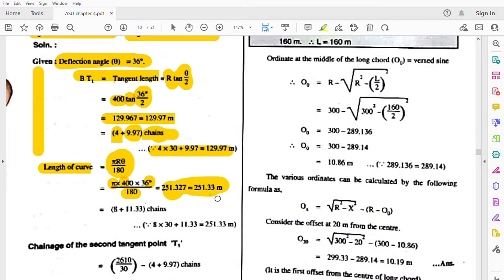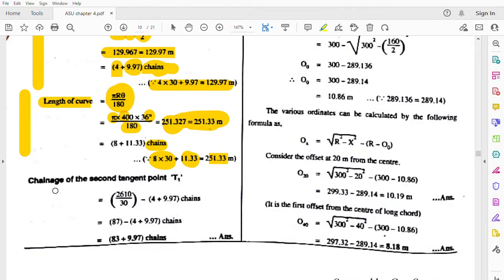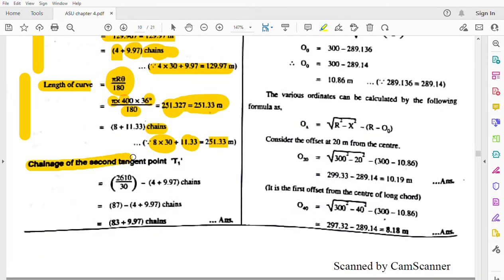Similarly, we will convert this into chains: 251.33 meters means 30 times 8, which is 240 meters, plus 11.33, giving 251.33 meters. This is the length of curve.